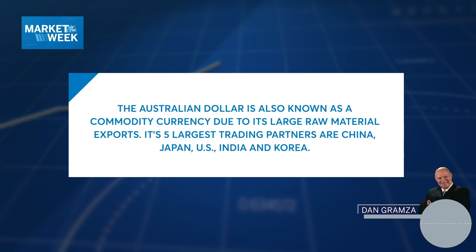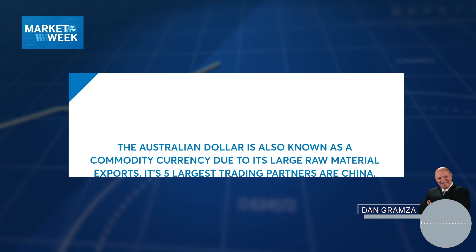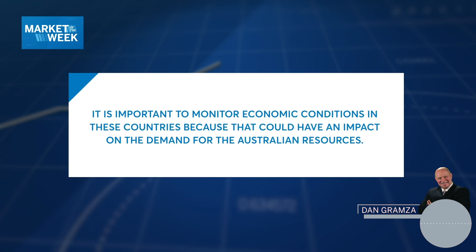Its five largest trading partners are China, Japan, U.S., India, and Korea. It's important to monitor the economic conditions in these countries because that could have an impact on the demand for Australian resources, which could have an impact on the demand for the Australian dollar.